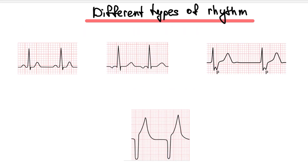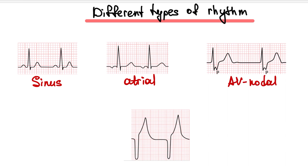Here you can see the different types of rhythm: sinus rhythm, atrial rhythm, AV nodal rhythm, and ventricular rhythm.